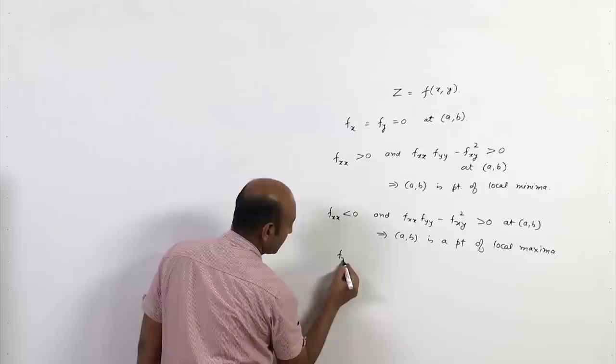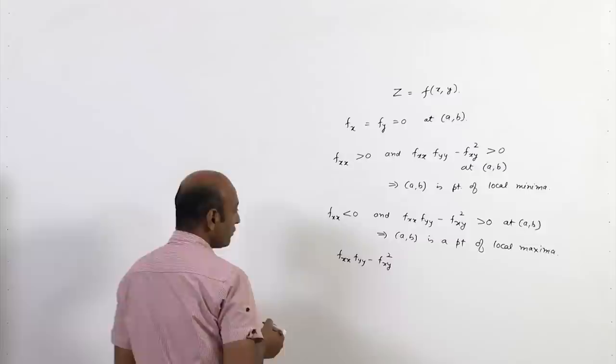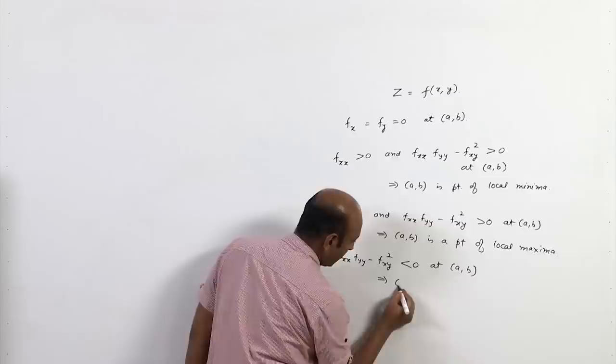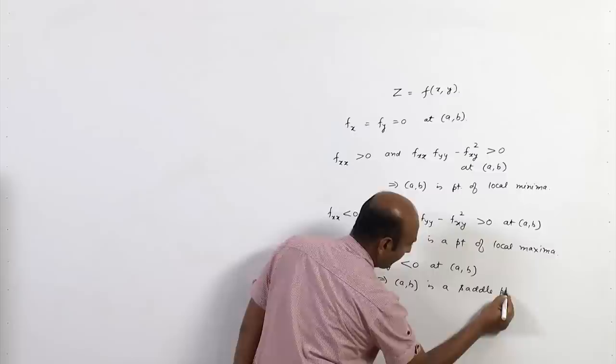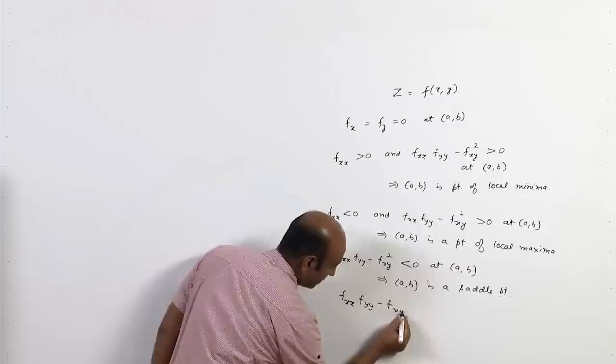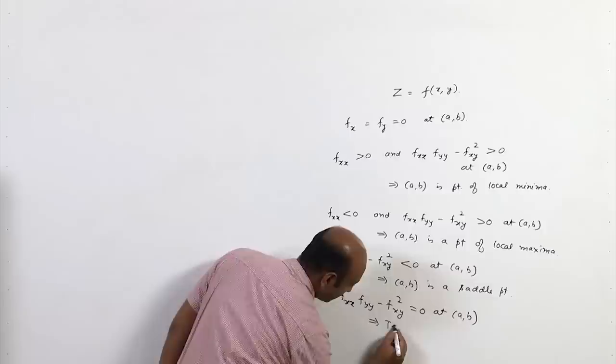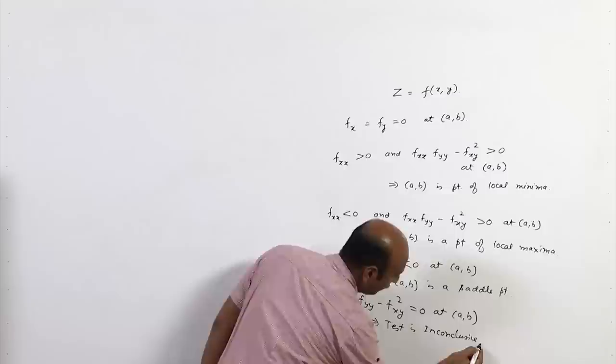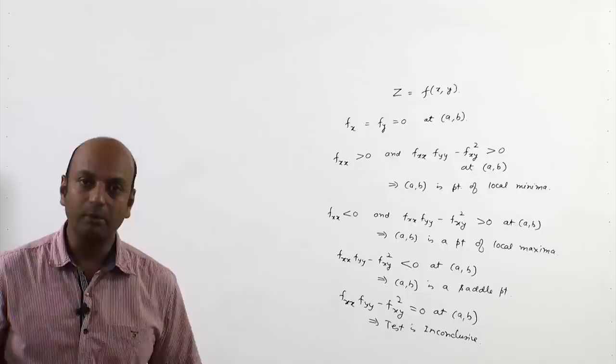If f_xx·f_yy - f_xy² is less than 0 at (a,b), then (a,b) is a saddle point. And if this quantity equals 0, the test is inconclusive. Inconclusive means we have to use the higher-order partial derivative test to check whether (a,b) is a point of local maxima, local minima, or a saddle point.